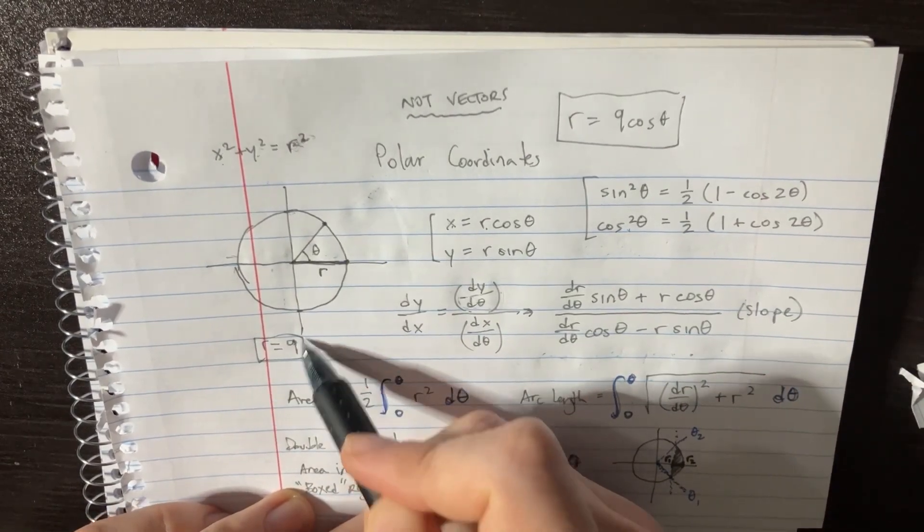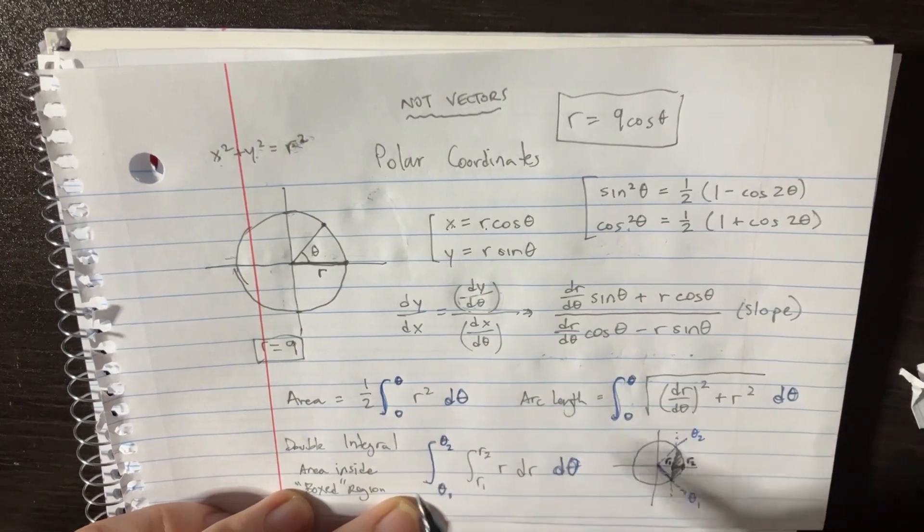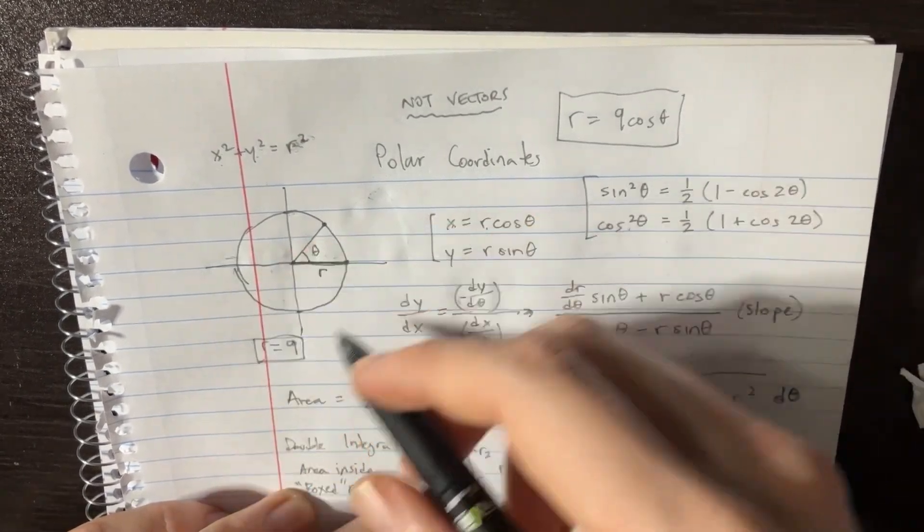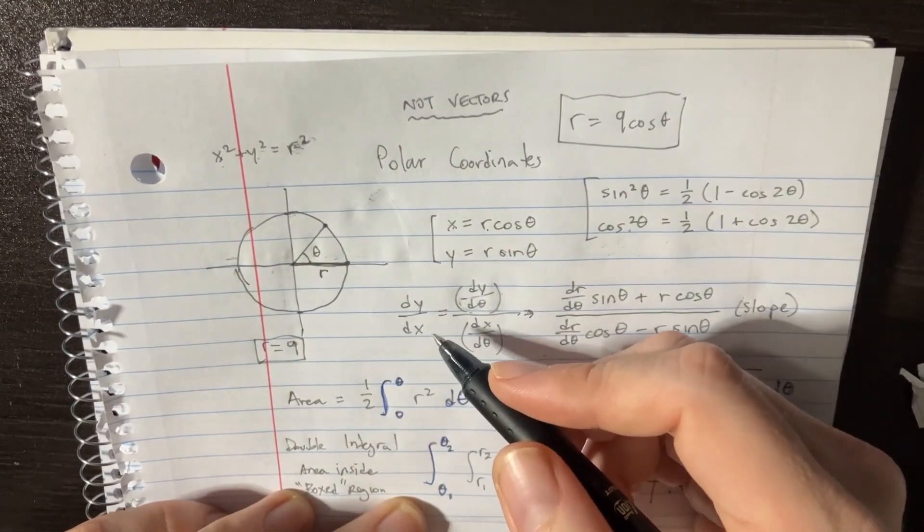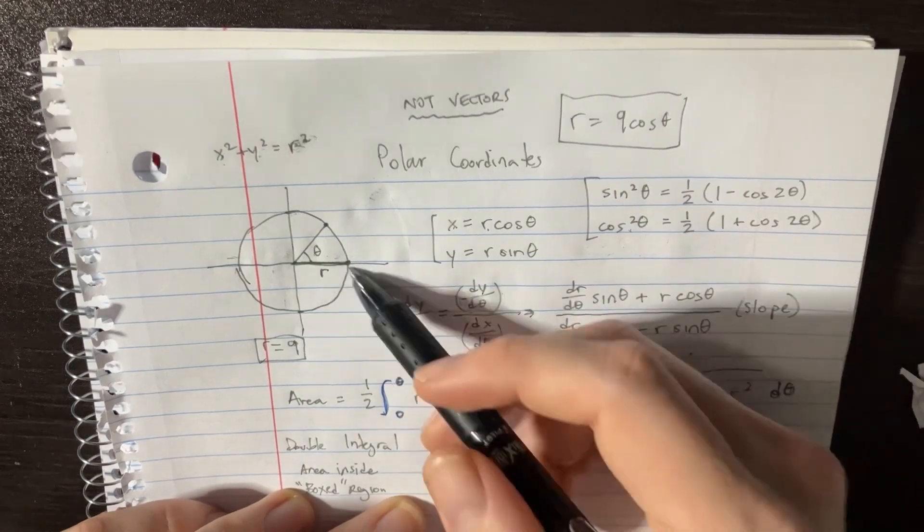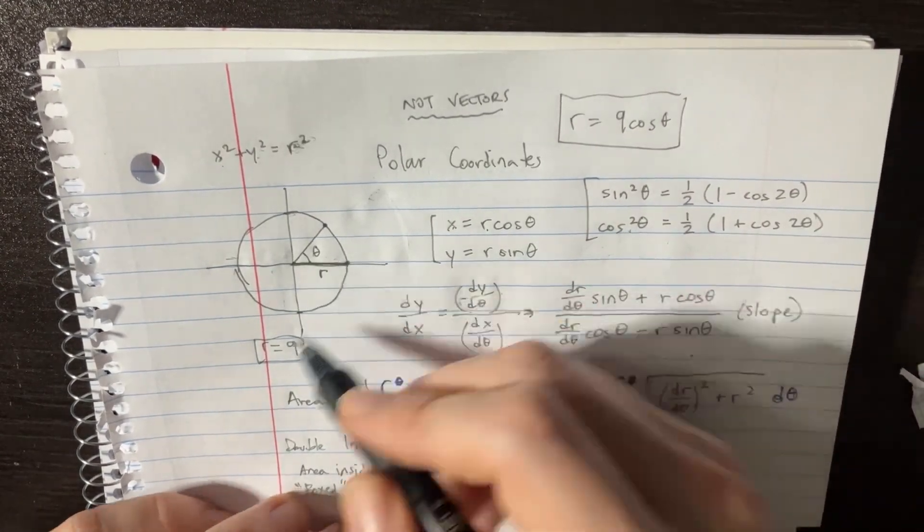It's really important to actually have a calculator that can graph these things so that you could set up the graph. Otherwise you're going to have a lot of trouble trying to figure out where the limits are and what the graph looks like.